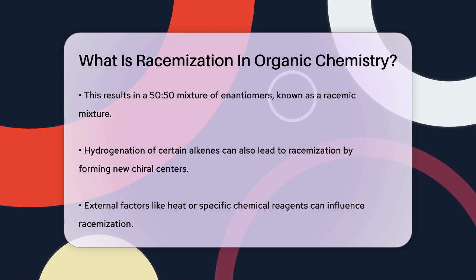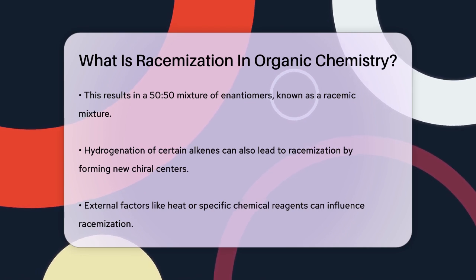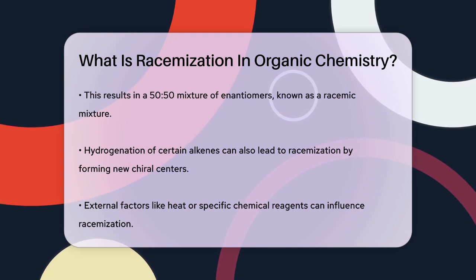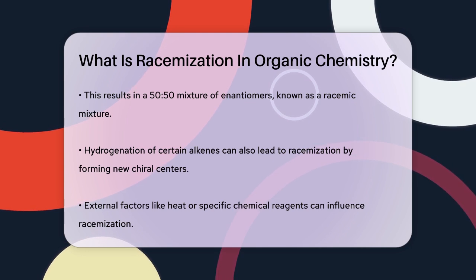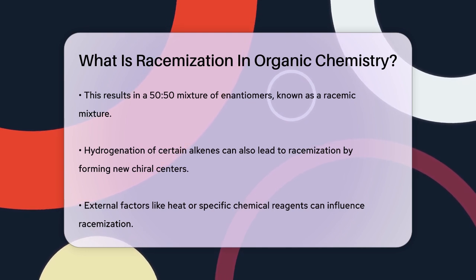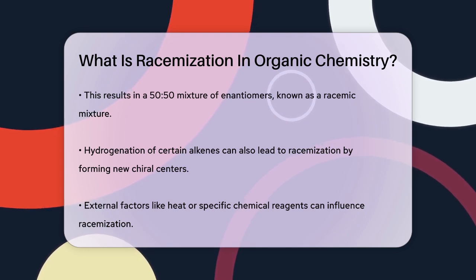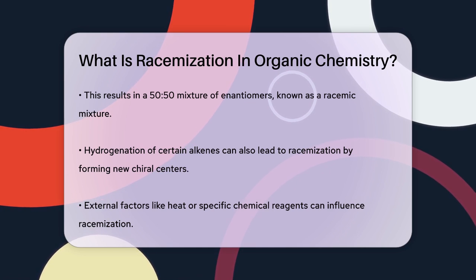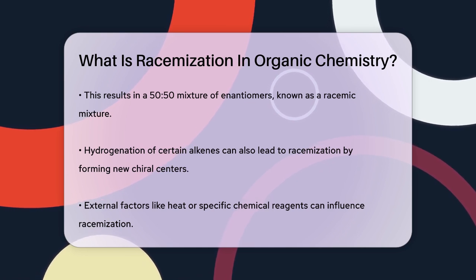Another example is the hydrogenation of certain alkenes, molecules with carbon-carbon double bonds. When these alkenes are hydrogenated, new chiral centers can form, resulting in a racemic mixture of the enantiomers.